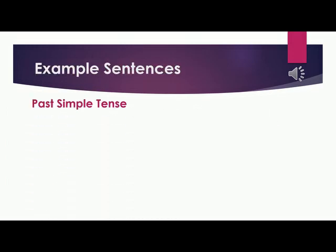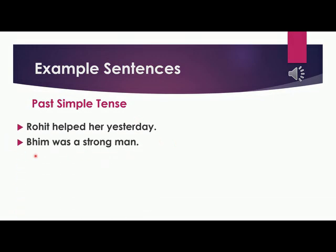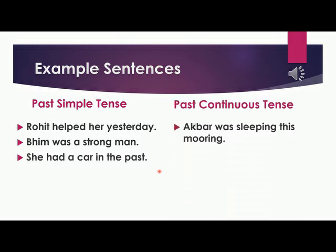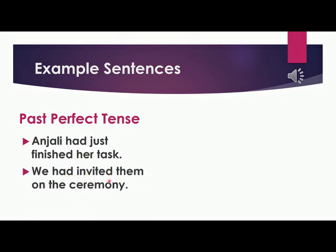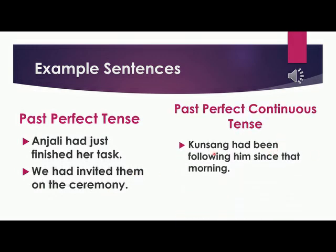Now, let's go to past simple tense: Rohit helped her yesterday. Bhim was a strong man. She had a car in the past. Past continuous tense: Akbar was sleeping this morning. They were enjoying the party yesterday. Past perfect tense: Anjali had just finished her task. We had invited them on the ceremony. Past perfect continuous tense: Kun Sang had been following him since that morning. Peter and Linji had been studying together for three years.